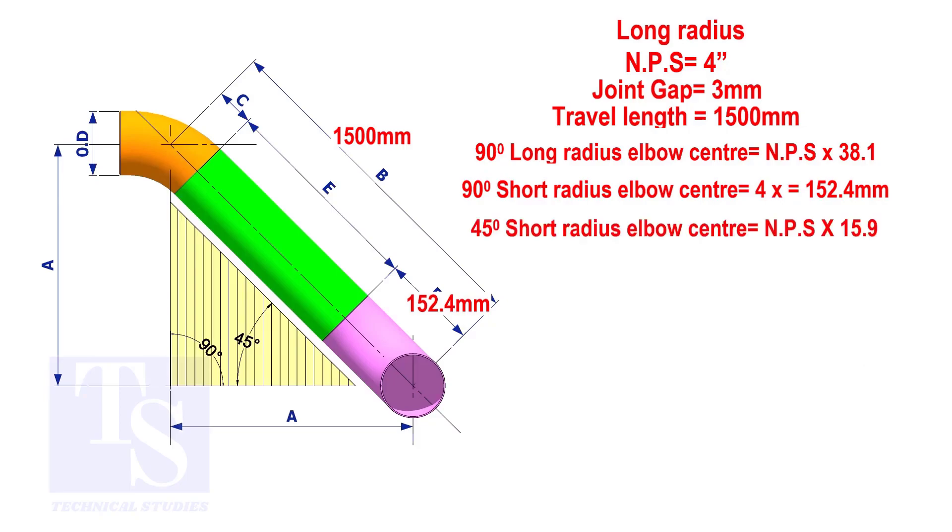To calculate the elbow center of a 45 degree long radius elbow, multiply the nominal pipe size by 15.9. The answer is 63.6 millimeters.